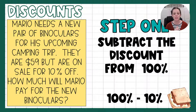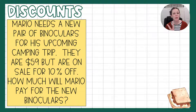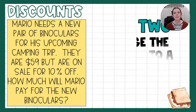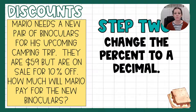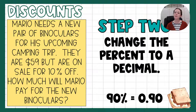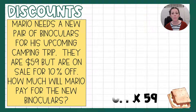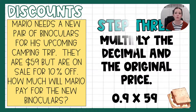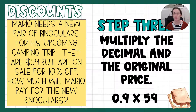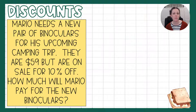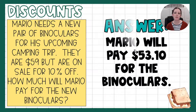100 minus 10 is 90% — that's what we're actually going to pay. Step two is the same: we're going to take that percentage and turn it into a decimal, so 90% as a decimal is 0.9. And then step three, same as before, we're going to take that decimal and multiply it by the original price. So 0.9 times 59 — as we just saw in the last example, Mario is paying $53.10 for the binoculars.